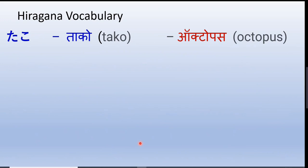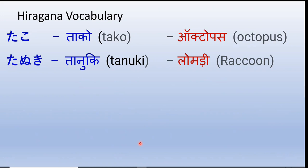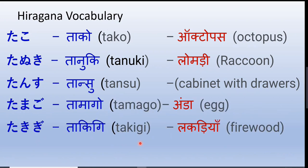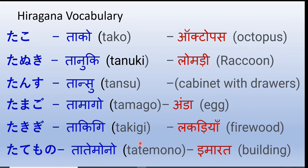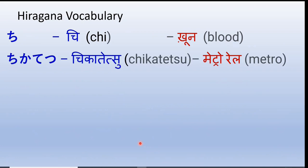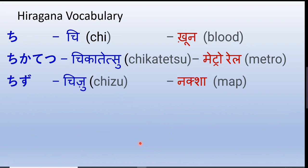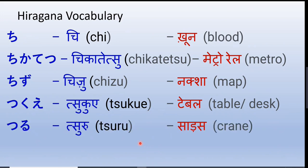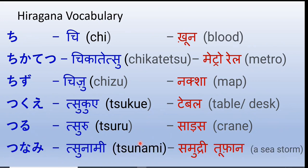Tako — octopus. Tanuki — raccoon. Tansu — a cabinet with drawers. Tamago — egg. Takigi — firewood. Tatemono — buildings. Chi — blood. Chikatetsu — metro rail. Chizu — map. Tsukue — table or desk. Tsuru — the crane. Tsunami — a huge sea storm caused by an earthquake under the ocean.